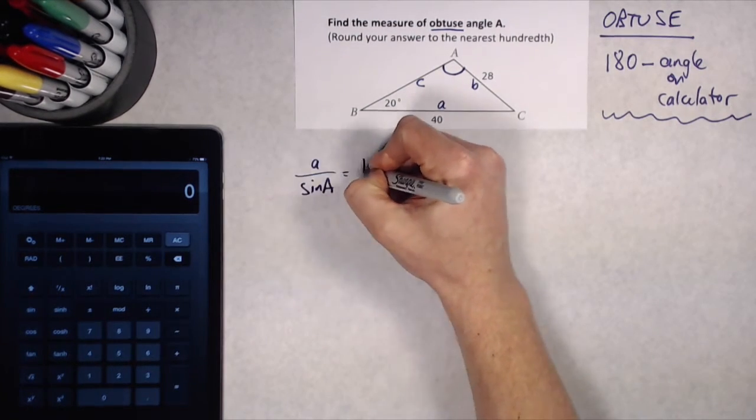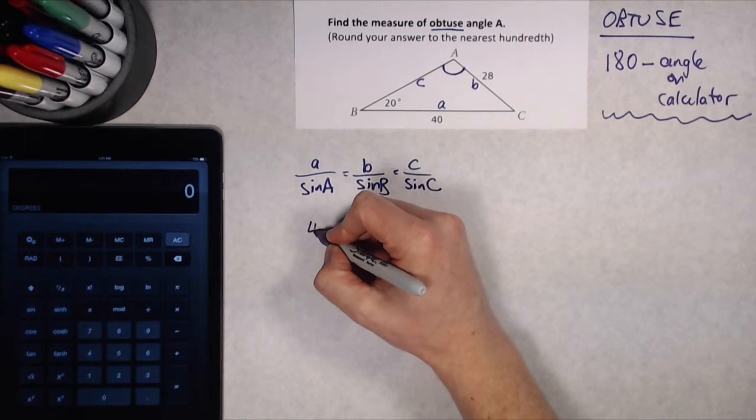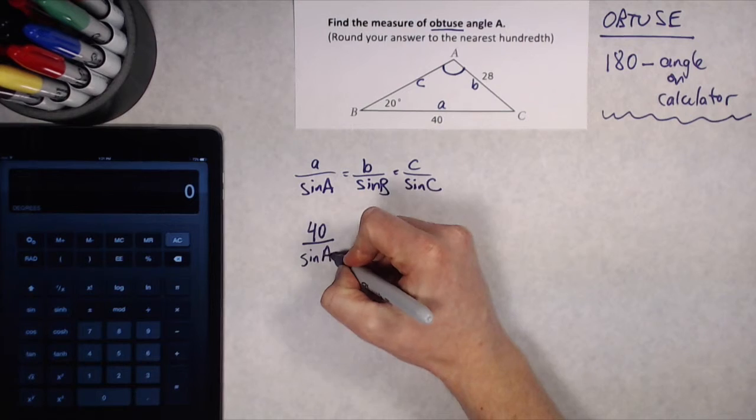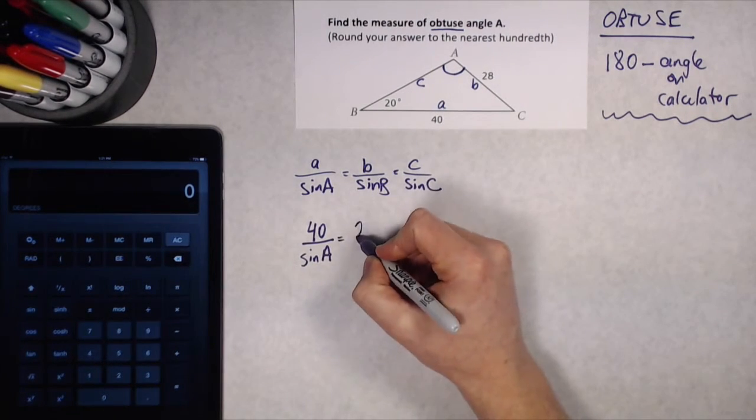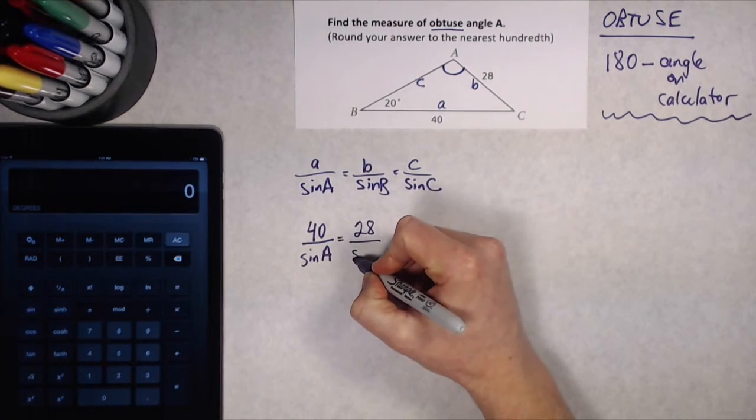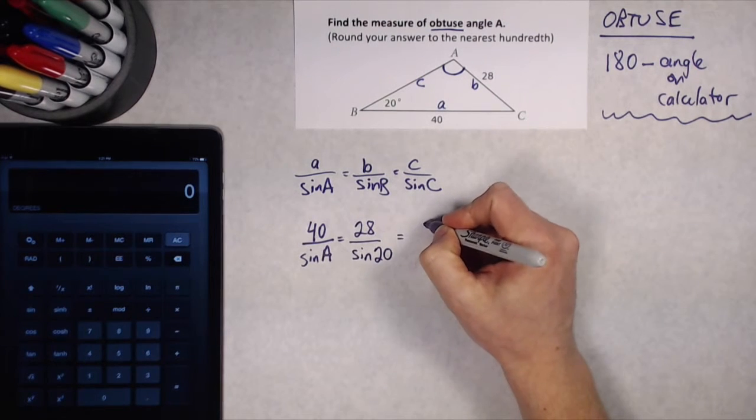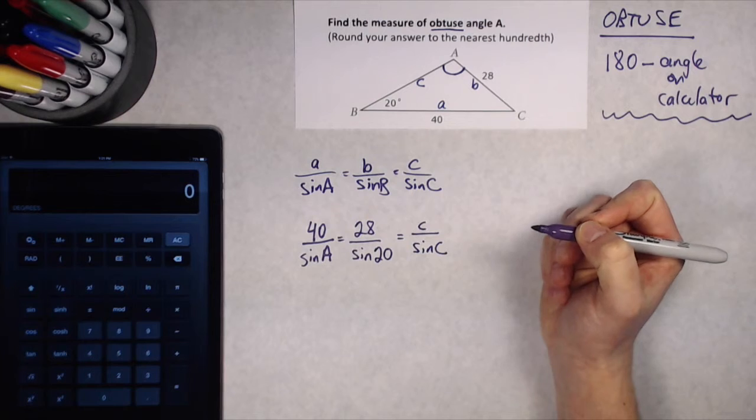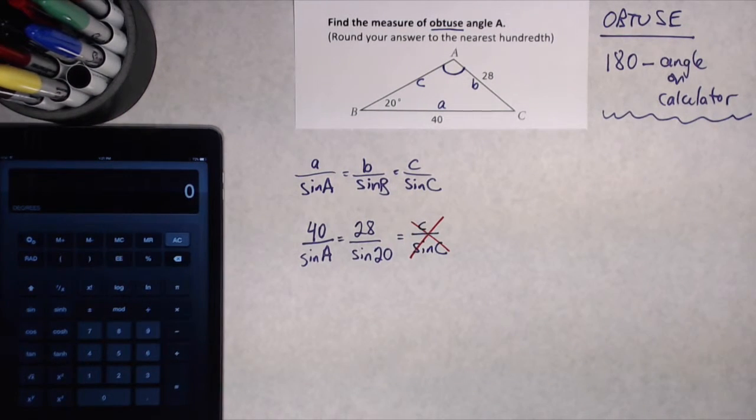I know I'm not working with the right triangle, so I'm going to write out the sine law and now that I've got all that written out, I can fill in what I know from the question. So instead of little a, I'm going to put 40 over the sine of angle A, which is actually what I'm looking for in this question. That's equal to little b, which is 28, over the sine of angle B, 20. And the C's, this is the fraction I'm not going to use because I don't know anything about them. So I'm going to cross them out and focus on the two fractions that I can use.